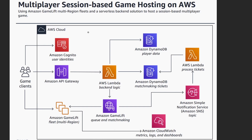At first glance, this looks like a pretty simple architecture, but let's walk through all the different steps that are involved here and understand what is actually going on. So our first step here is we have our game clients. The first thing they need to do is they need to authenticate — we need to know that this user has successfully signed in and is allowed to connect to our servers. For that, we're going to be using the well-known service, Amazon Cognito.